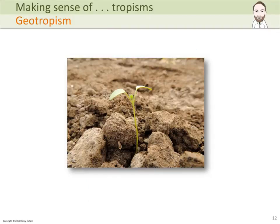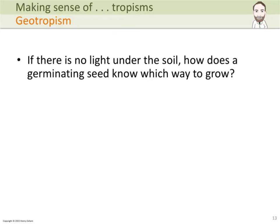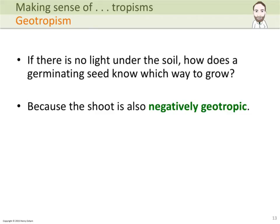When a seed germinates, the small shoot will come out of the ground and start growing towards the light. However, you may be asking yourself how it detects where the light is when it is still in the ground. Well, the answer is that it can also grow away from gravity. Plants can detect light — phototropism — and they can also detect gravity, which is called geotropism. The shoot is actually negatively geotropic.